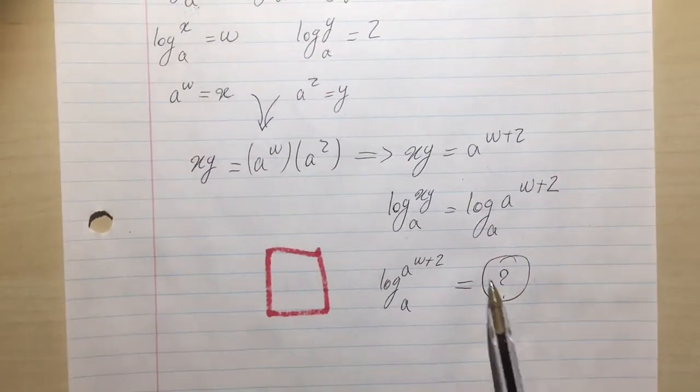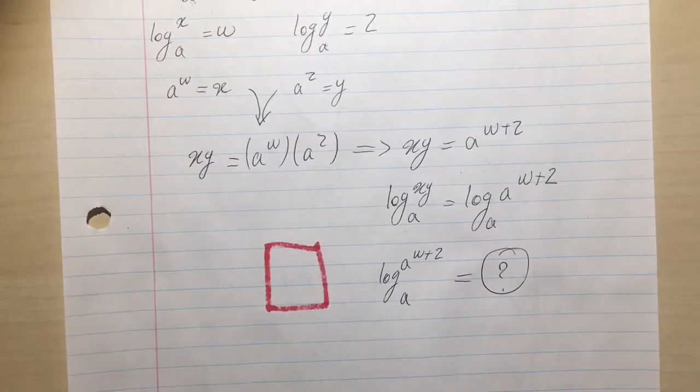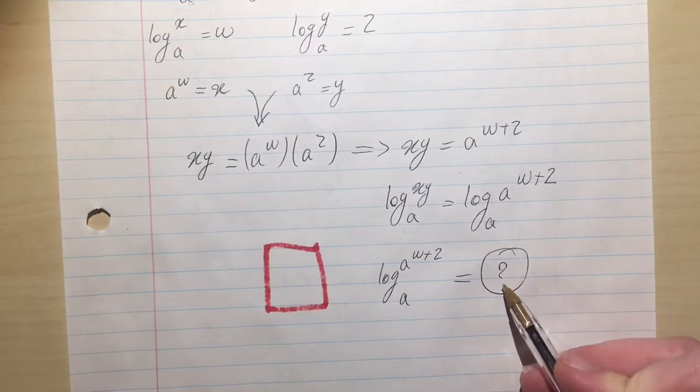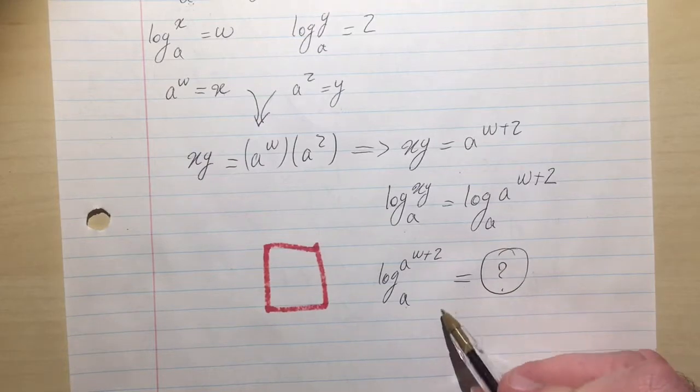So can you read it again, or read this log in another way? Yes. A to the exponent question mark is A to the w plus z.